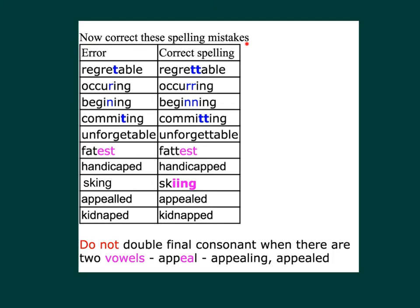Now correct these spelling mistakes. Error → Correct spelling. 'Regrettable' — check the spelling. 'OCCURRING' — occurring. Correct spelling. Error → Correct spelling: C-O-M-M-I-T-T-I-N-G, committing. Error: U-N-F-O-R-G-E-T-A-B-L-E → Correct spelling: U-N-F-O-R-G-E-T-T-A-B-L-E, unforgettable.